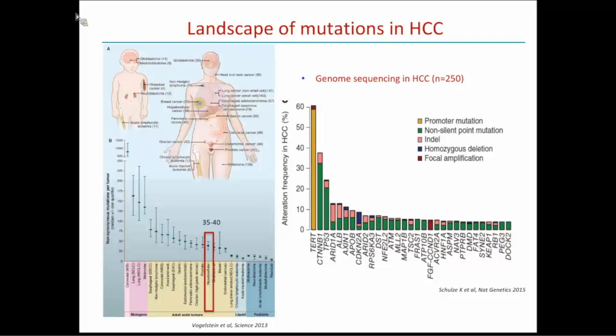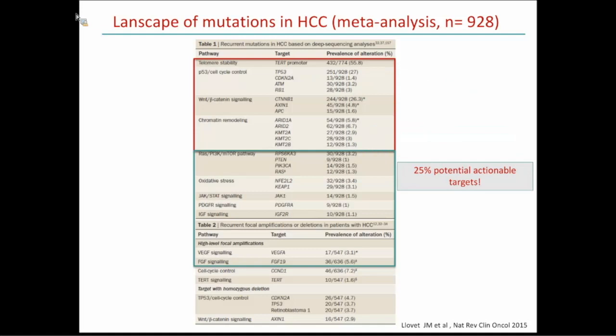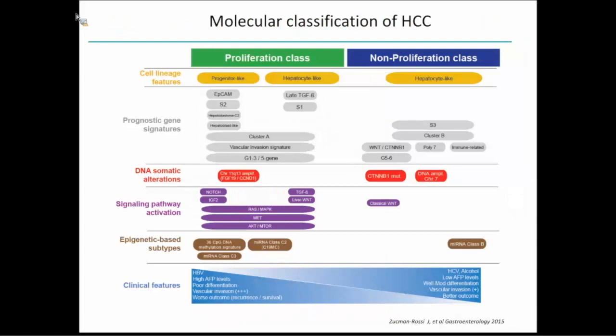The number of mutations per tumor is around 40 in HCC — in between hypermutated tumors like colorectal with MSI, lung, or melanoma, and pediatric or liquid tumors with fewer than 10 mutations per tumor. Unfortunately the most common mutations in HCC are undruggable, which has limited the success of precision oncology in this disease. In a meta-analysis of 928 samples, overall 25% of tumors have at least one druggable target when analyzed across the spectrum.